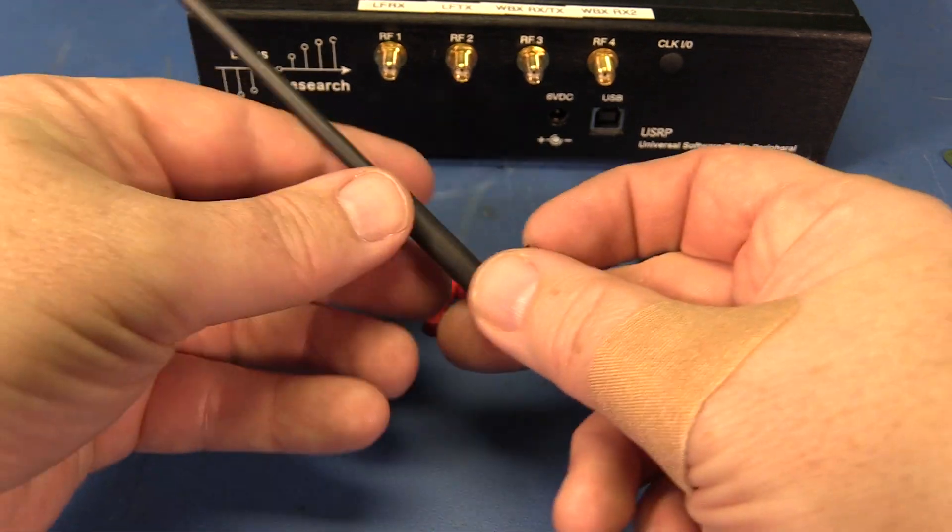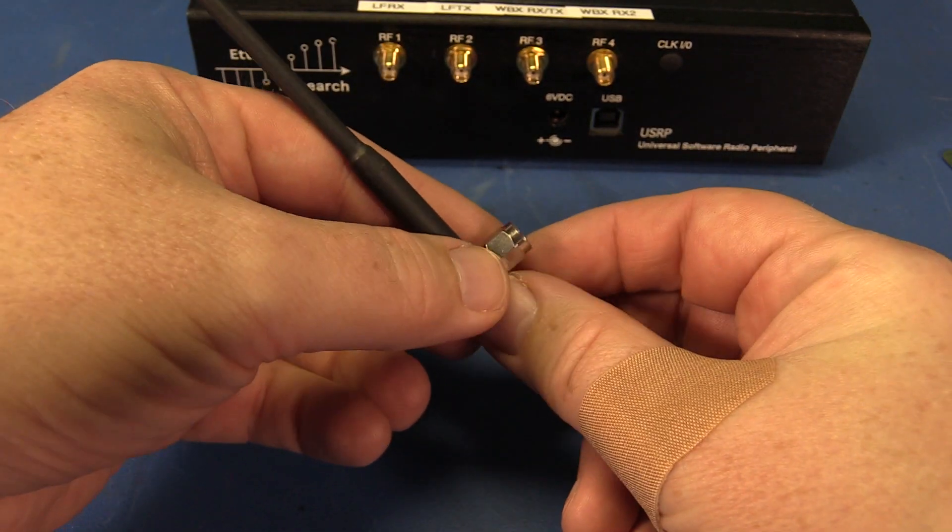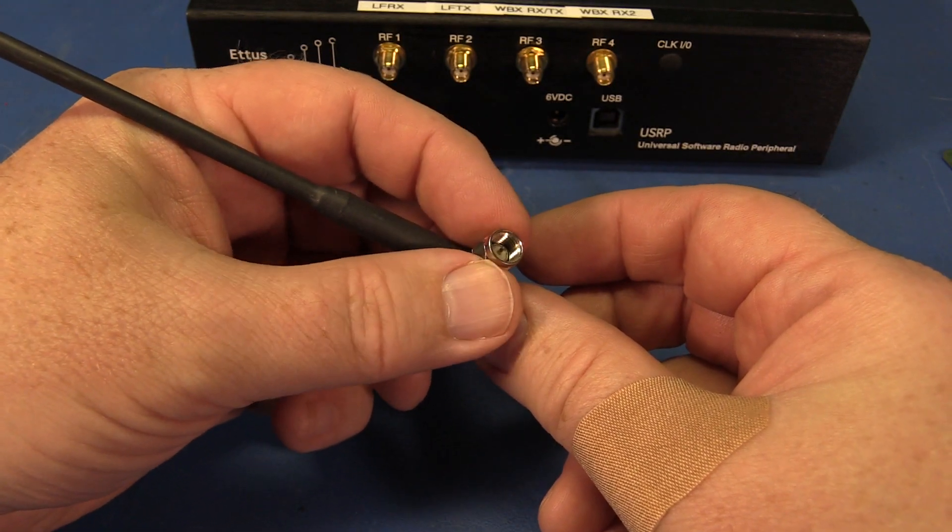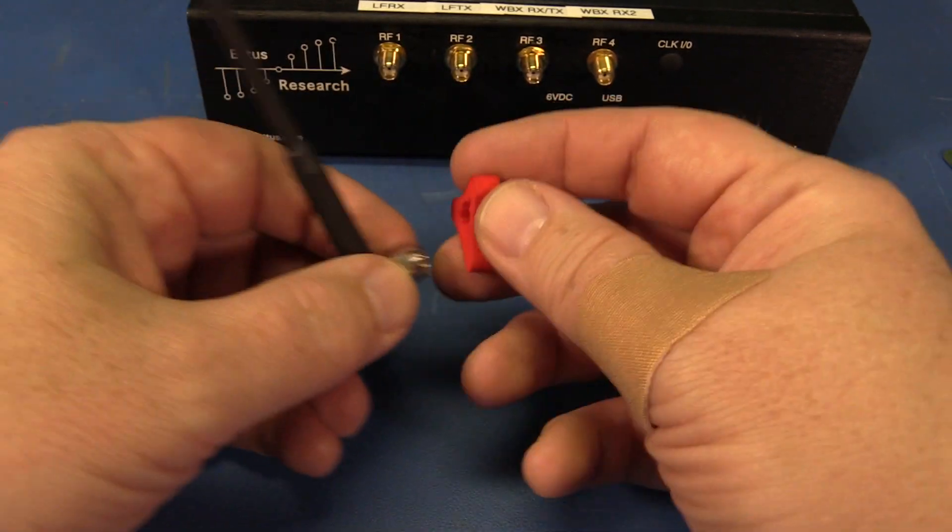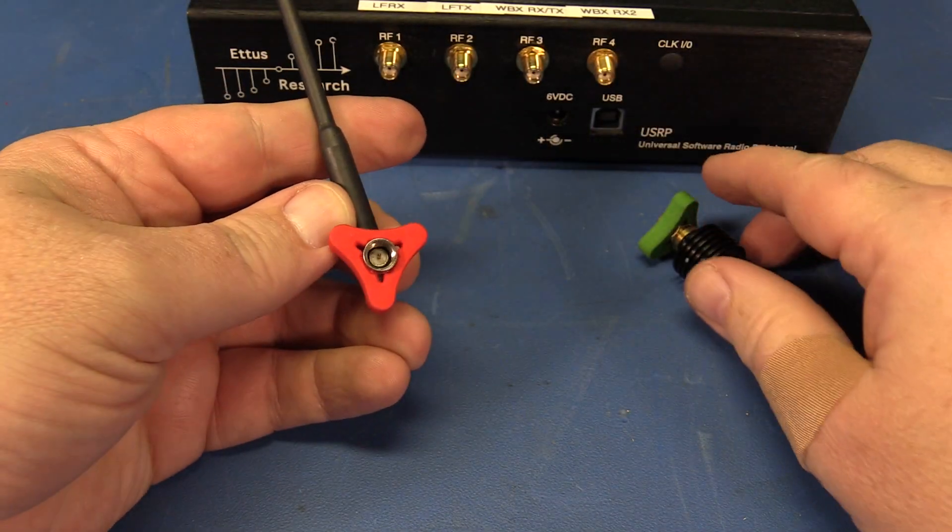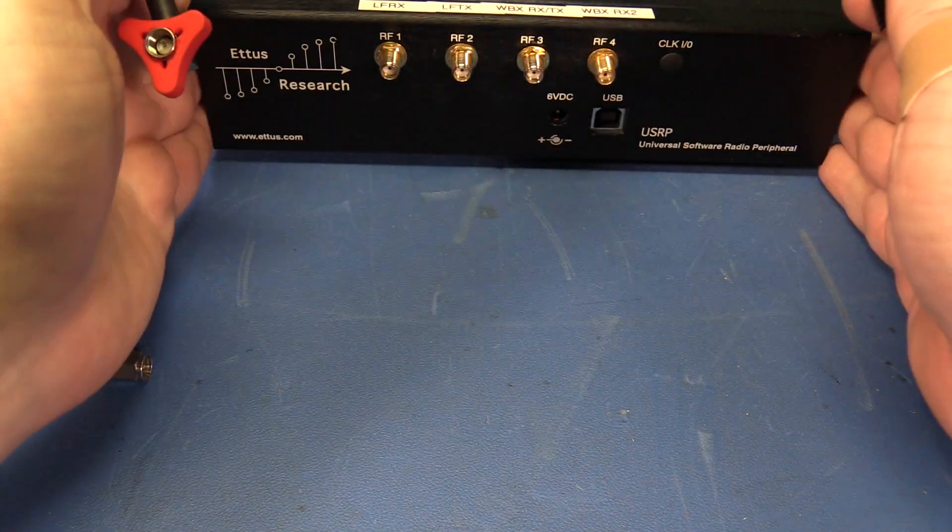Now here's an antenna. The right angle connector has the same effect. It can be hard to get a good grip on the connector if it's really tight. So I'm going to press on this knob here. Now they're quite a bit easier to handle.